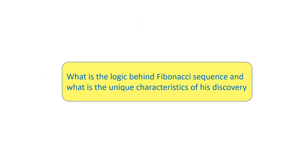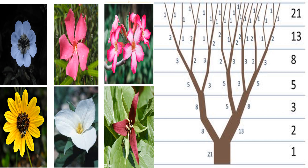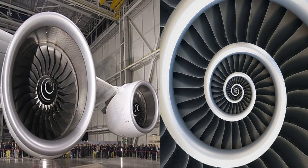What is the logic behind the Fibonacci sequence and what are the unique characteristics of his discovery? There are so many things in nature that follow Fibonacci's number. For example, the number of petals in flowers — 3, 5, 8, 11 — and the distribution of branches in trees — 1, 2, 3, 5, 8, 13, and 21 — follow the Fibonacci sequence. Even the fabrication and analysis of Fibonacci spiral horizontal axis wind turbines also follow the Fibonacci sequence. Isn't it amazing?